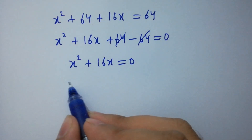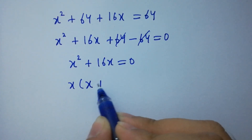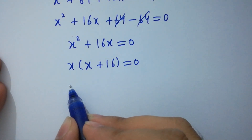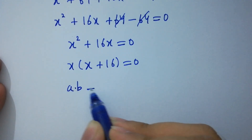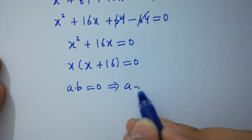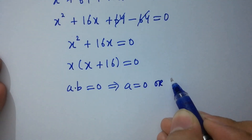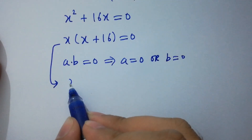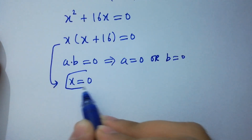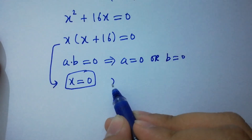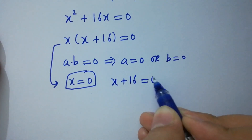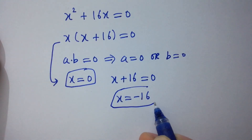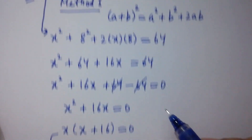Here x can be taken as common, giving x(x + 16) equal to 0. As we know, if ab equals 0, then a equals 0 or b equals 0. So x equals 0, which is one value of x, or x plus 16 equals 0, giving x equals minus 16, which is also a value of x. This is Method 1.